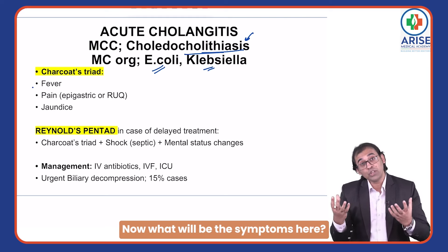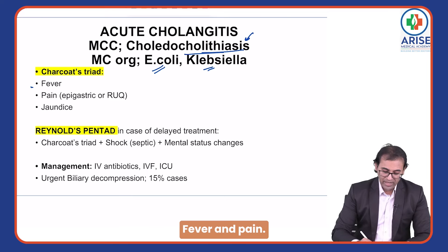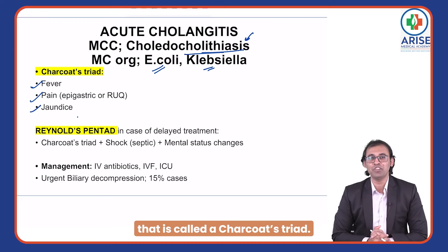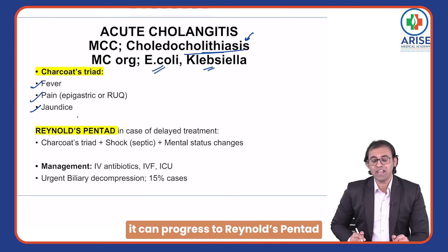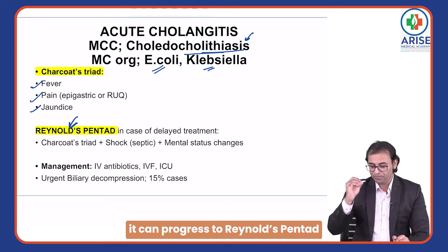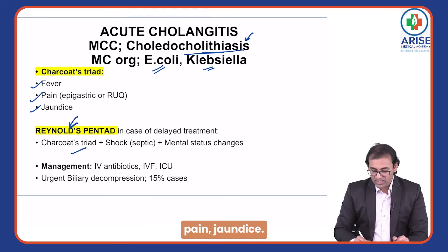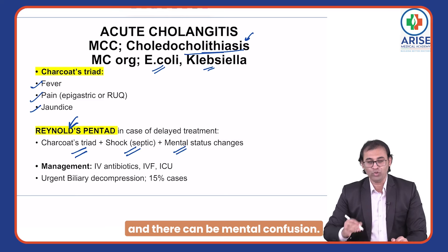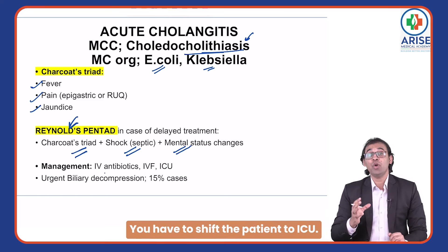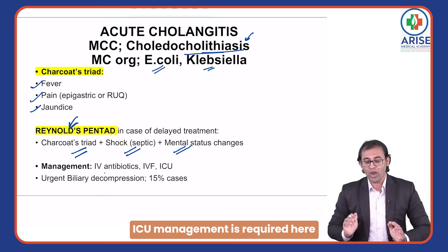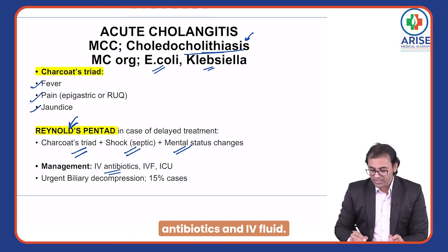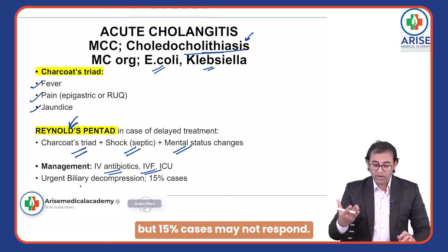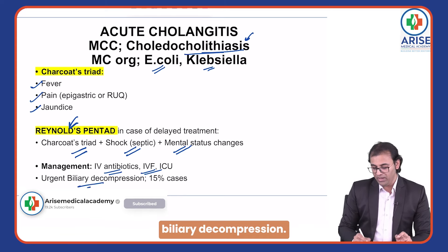With infection, the symptoms are fever, pain, and jaundice — forming Charcot's triad. If untreated, it progresses to Reynolds' pentad, which includes fever, pain, and jaundice plus septic shock and mental confusion. This is an emergency requiring ICU management with aggressive IV antibiotics and IV fluids. About 15% of cases may not respond and require urgent biliary decompression.